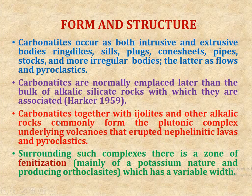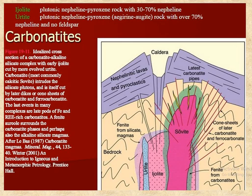Carbonatites, together with ijolite and other alkaline rocks, commonly form the plutonic complex underlying volcanoes that erupted nephelinitic lava and pyroclastics. Surrounding such complexes there is a zone of fenitization, mainly of potassium nature, producing orthoclase-rich rocks of variable width. This is the idealized cross-section of a carbonatite–alkaline silicate complex, with early ijolite cut by more evolved pyroxenite, carbonatite intruding the silicate pluton, itself cut by later dikes of sovite and ferro-carbonatite. Late events include veins of apatite and rare-earth-rich carbonatite, with fenite surrounding the carbonatite phase and perhaps also the alkaline silicate magma.